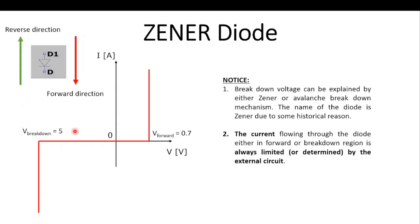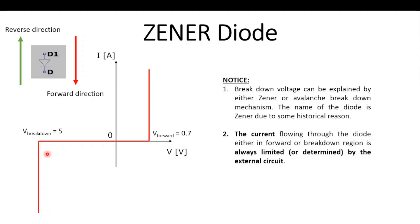That's the key thing to pay attention to with the Zener diode. The breakdown voltage — the voltage at which the diode starts to let an infinitely big current flow in the reverse direction — can be around 5 volts or 3.5 volts depending on the manufacturing, and because of that it can be used as a voltage regulator.